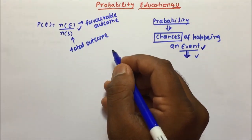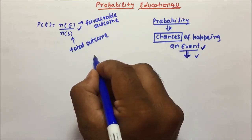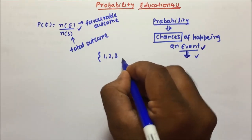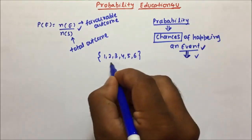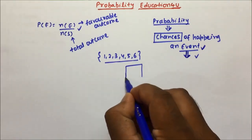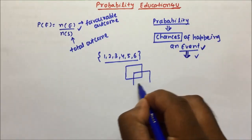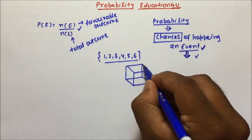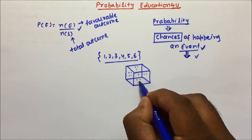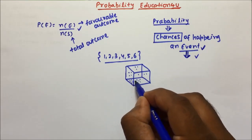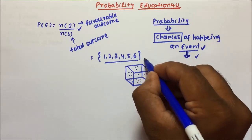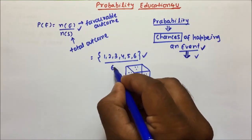Let me give a simple example. Suppose you are throwing a dice. On a dice, the numbers 1, 2, 3, 4, 5, 6 are printed. The dice is cubical in shape and has 1, 2, 3, 4, 5, and 6 on its faces. So the total outcomes will become 6.